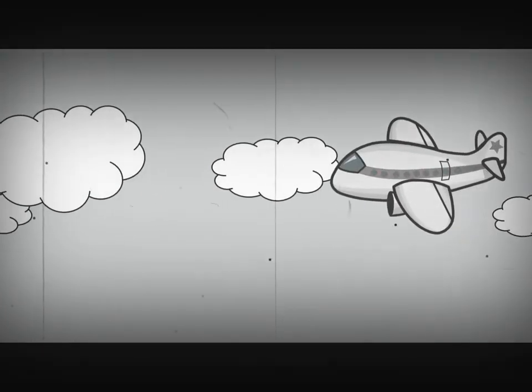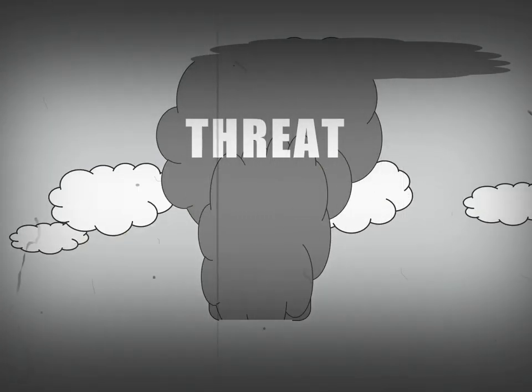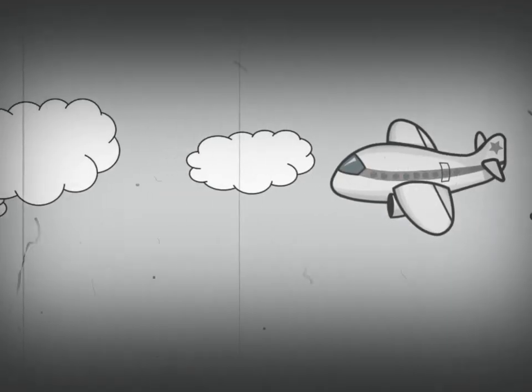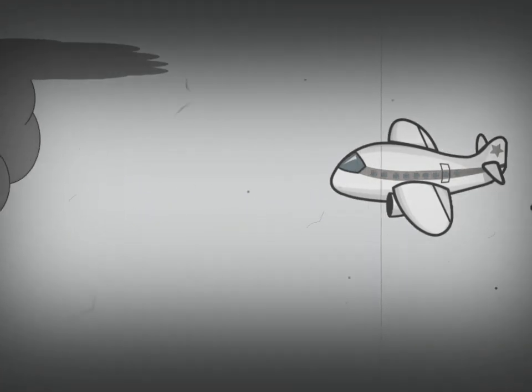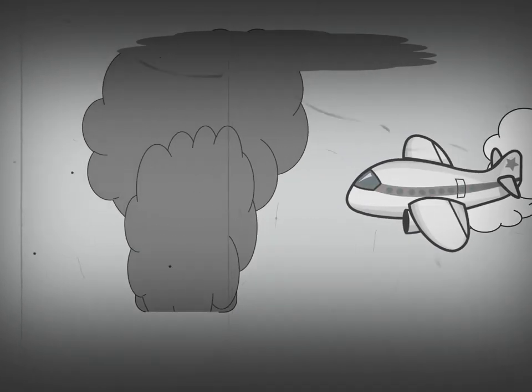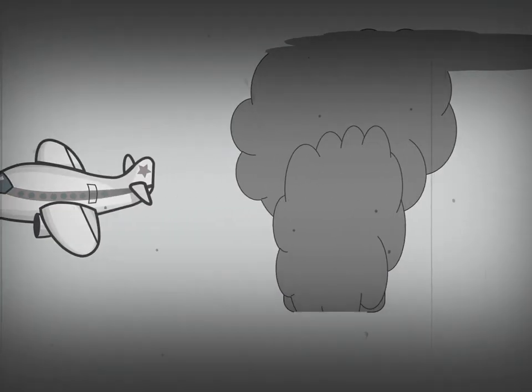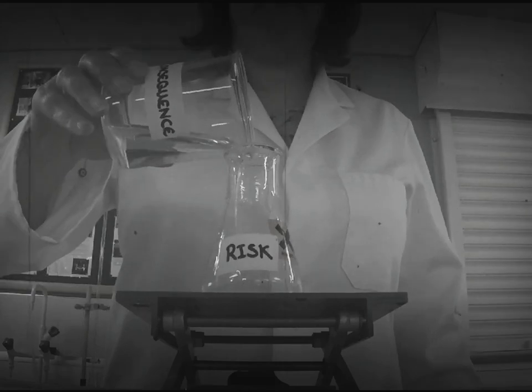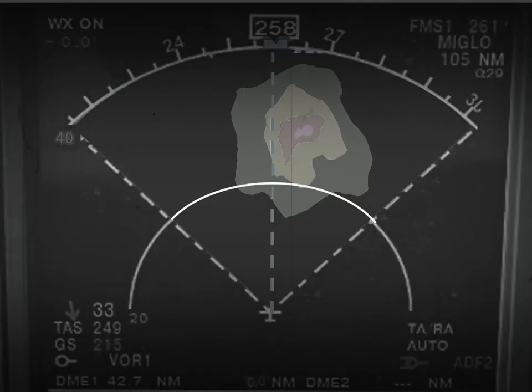Take, for example, thunderstorms. These are threats — they are outside of our control. The risk is posed by flying too close. These risks include lightning strike, severe icing, or severe turbulence. Nothing the pilot can do can alter these consequences. Instead, we must reduce the risk by decreasing the likelihood of its happening. Here, a threat is managed by avoidance.